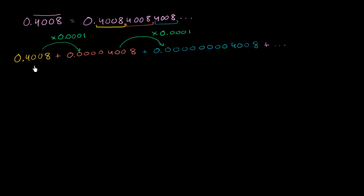So we can rewrite all of this business as 0.4008 times our common ratio of 10 to the negative fourth to the zeroth power. Plus 0.4008 times 10 to the negative fourth to the first power. And that gives us that value right over there.